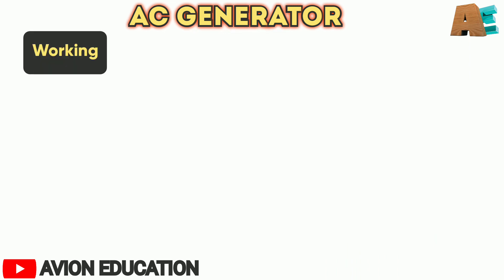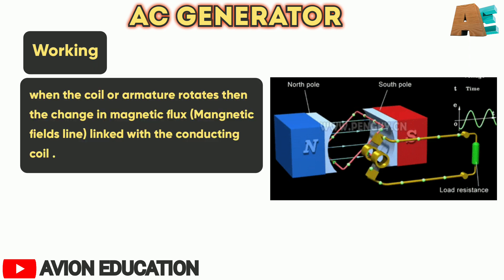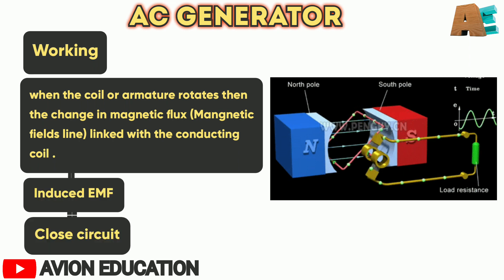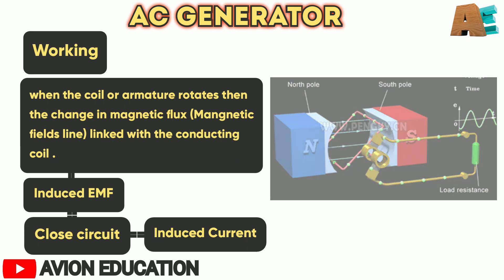Now, how does an AC generator work and how does it produce alternating current? When the coil or armature rotates in the magnetic field, there is a change in the magnetic flux linked with the conductive coil. Due to that change, an EMF is induced, and in the closed circuit, an induced current will flow.